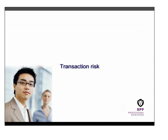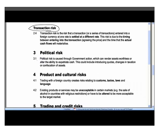Transaction risk is in some ways the most obvious currency risk, and when we look at ways of managing currency risk this is the one we'll focus on most. Transaction risk arises when you enter into a transaction in a foreign currency and agree a price. Settlement typically occurs much later — a month, two months, three months or more — and by then exchange rates may have moved, meaning you end up paying or receiving a different amount to what you expected.